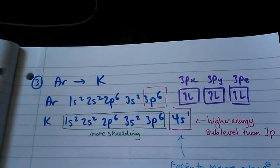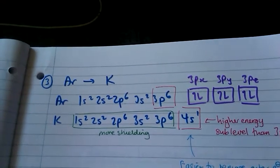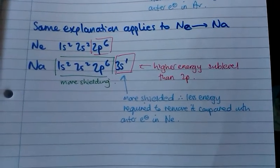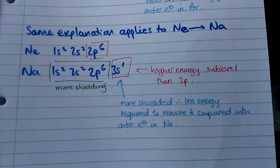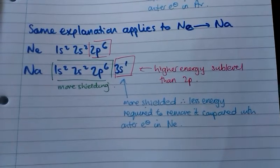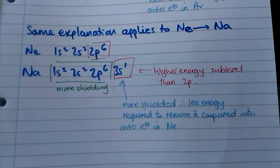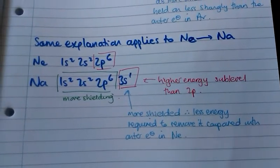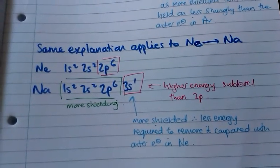That's why there is a decrease in ionization energy going from argon to potassium, and the same explanation applies going from neon to sodium. The outer electron in sodium is in a higher energy sublevel than in neon and is also more shielded, so less energy is required to remove it compared to removing the outer electron in neon.